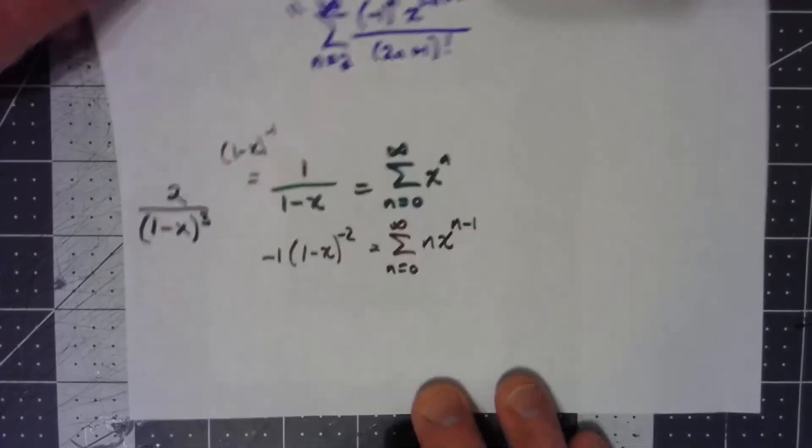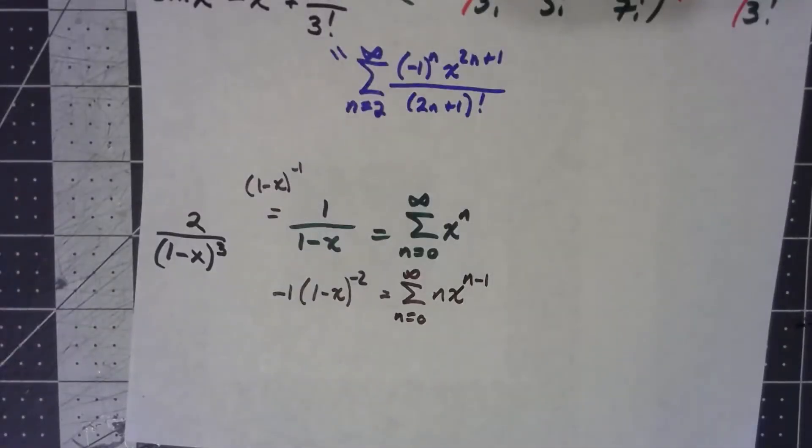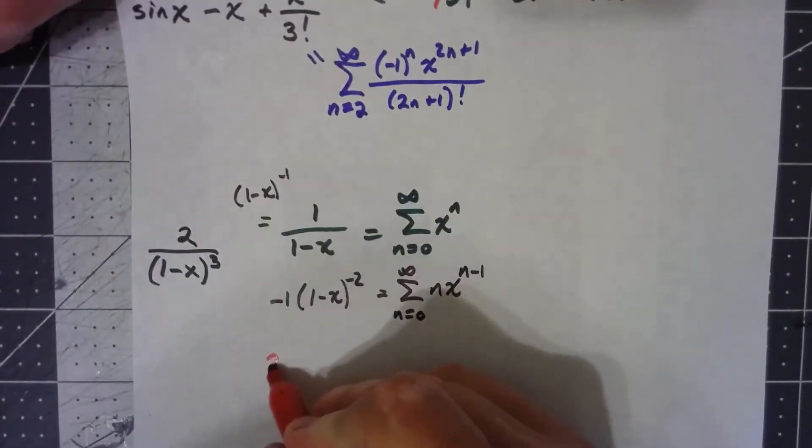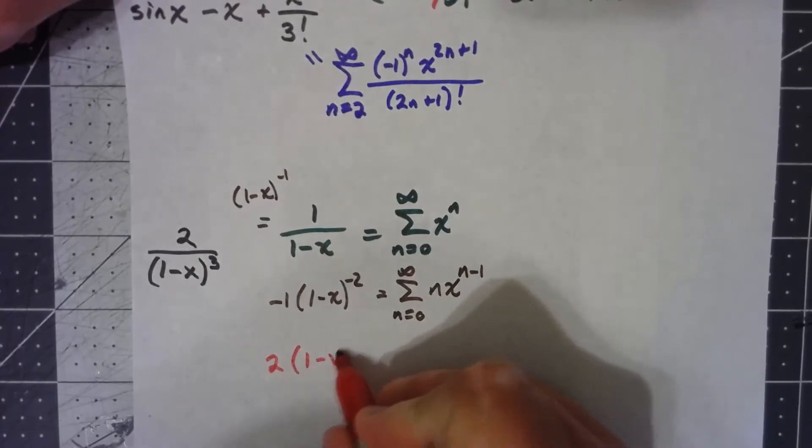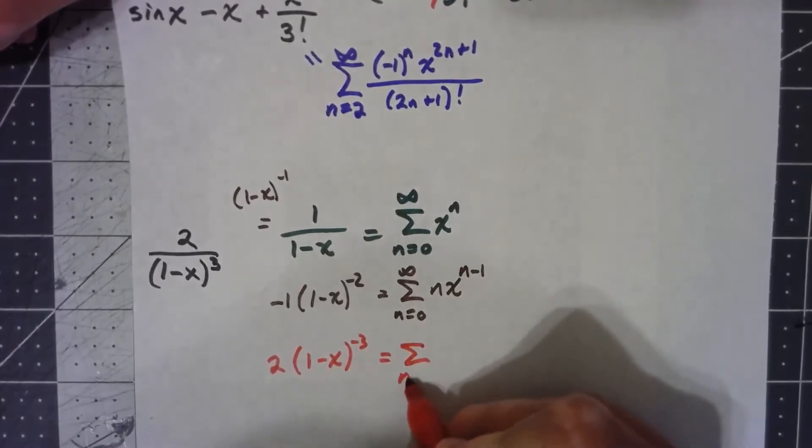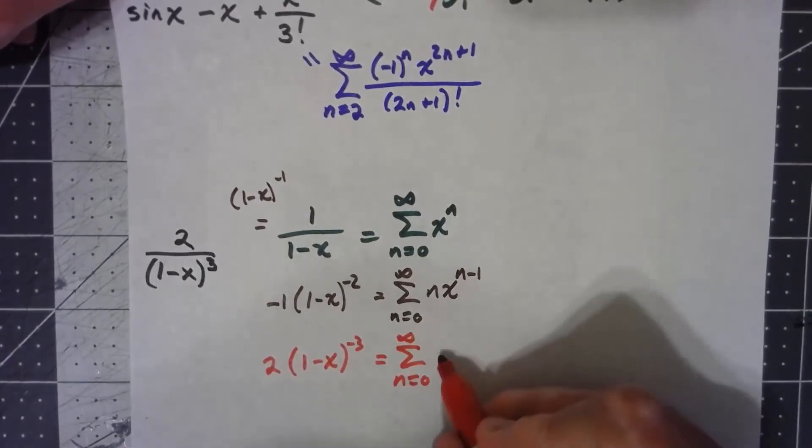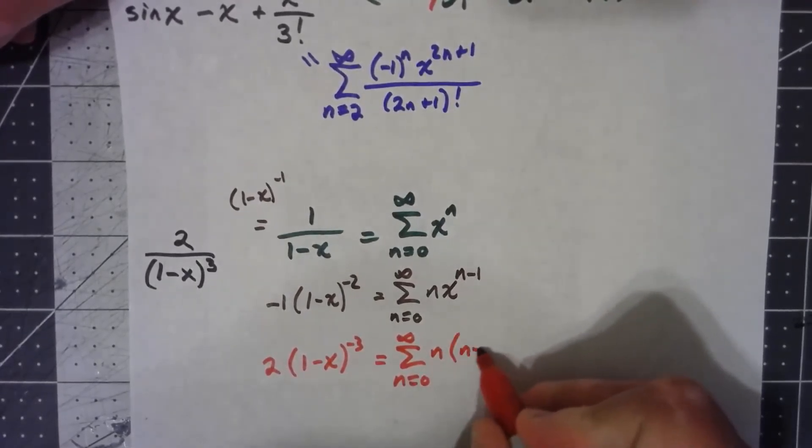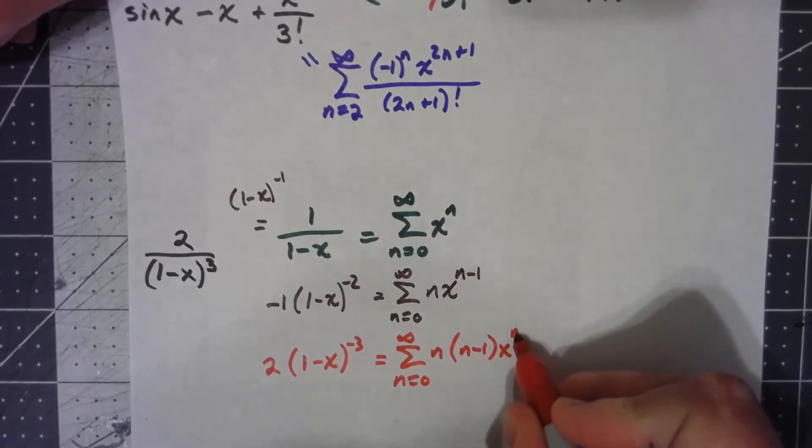Let's do it again. Take the derivative of both sides. Here, I get 2 times 1 minus x to the negative 3. Again, multiply by the exponent, subtract 1 from the exponent.